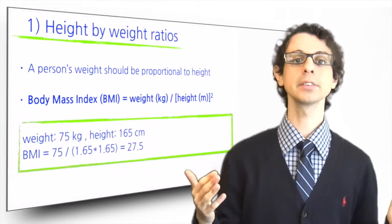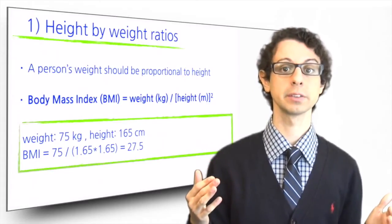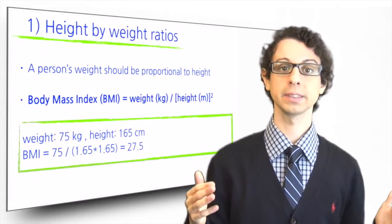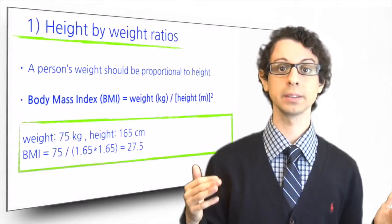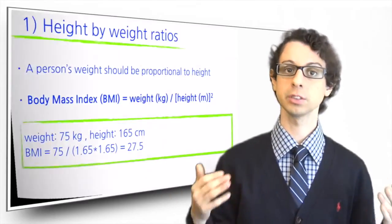For example, a person who weighs 75 kilograms and is 1.65 meters tall has a BMI of 75 divided by 1.65 times 1.65, which equals 27.5, considered overweight.